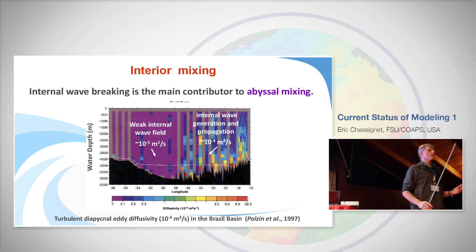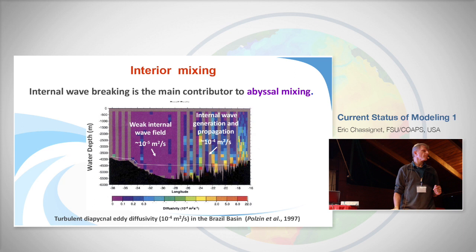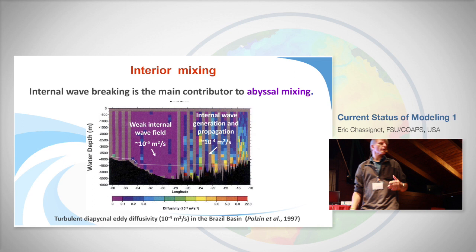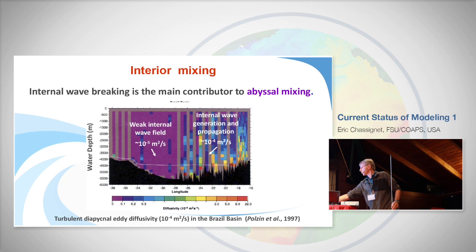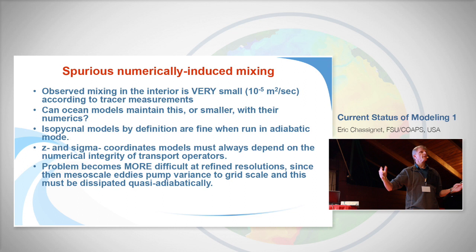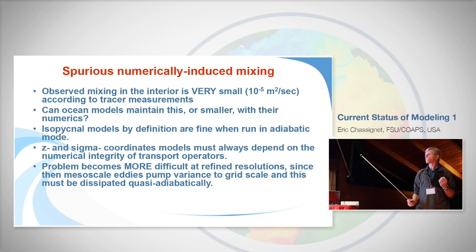Interior mixing is very, very small in the ocean. In the Brazil Basin, for example, where there are few internal waves, the waves don't break and interior mixing is on the order of 10⁻⁵ m²/s. Where internal waves propagate over topography and break, mixing can reach up to 10⁻⁴ m²/s. To put 10⁻⁵ in perspective: if you take a kilometer cube and put a hand mixer in the middle, that's what it is — very, very small. Ocean models should maintain this level or smaller in their numerics, and then you can parameterize processes occurring at sub-grid scales.